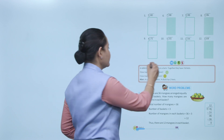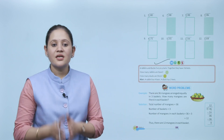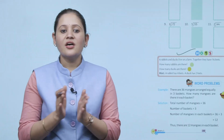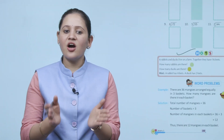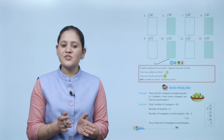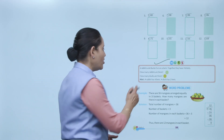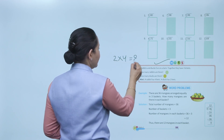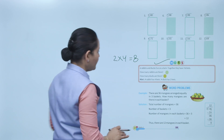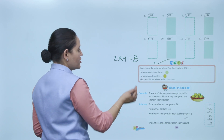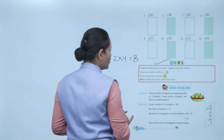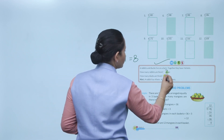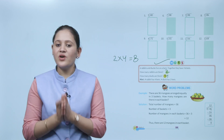Higher-order thinking: 6 rabbits and ducks live on a farm; together they have 16 feet. A rabbit has 4 feet and a duck has 2 feet. If there are 2 rabbits, that's 2 × 4 = 8 feet; 16 minus 8 leaves 8 feet for ducks. 8 ÷ 2 = 4 ducks. So 2 rabbits plus 4 ducks equals 6 animals total.